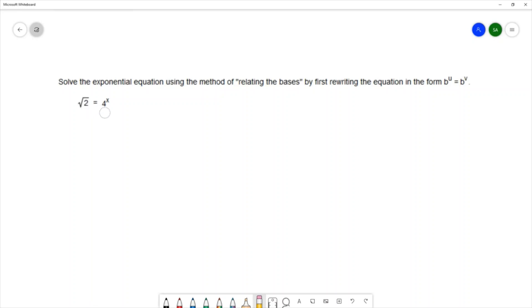Our equation is √2 = 4^x. We have square root of 2 equals 4 to the x. So as I look at these two numbers, on the left we have a base of 2, on the right we have a base of 4. We want to have the same base and I know that 4 can be written as 2 squared.